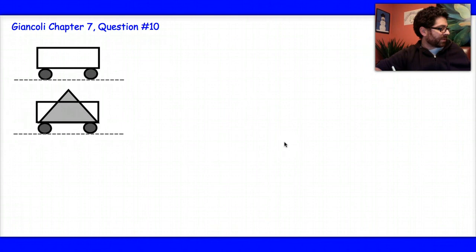The problem reads: a 3,800 kilogram open railroad car coasts along with a constant speed of 8.60 meters per second on a level track. Snow begins to fall vertically, fills the car at a rate of 3.5 kilograms per minute. Ignoring friction with the tracks, what is the speed of the car after 90 minutes?